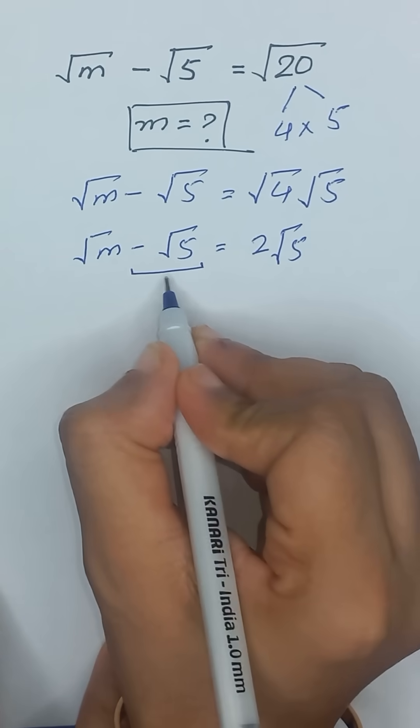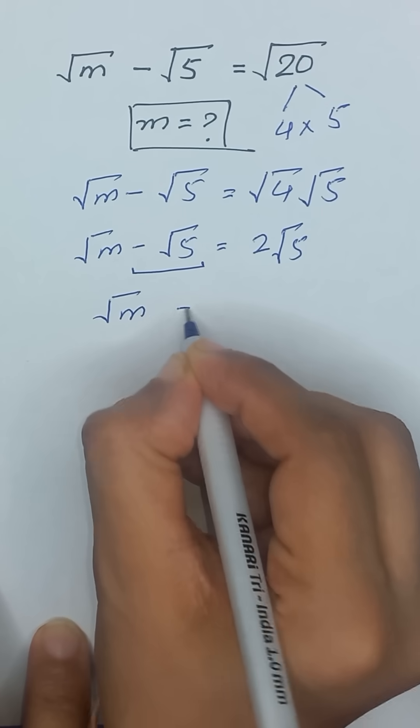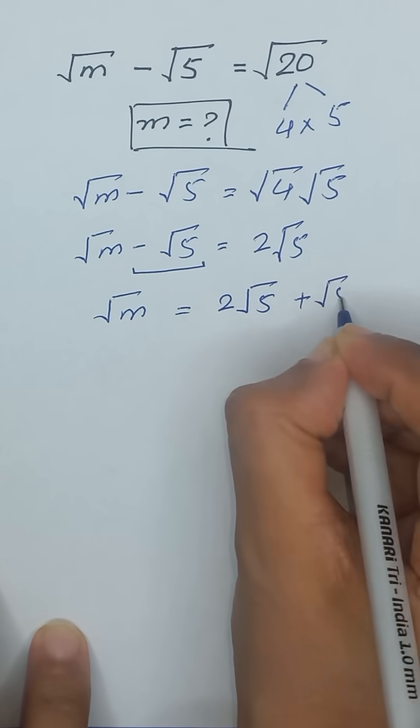I will take this negative square root of 5 to the right hand side. So it will become positive 2 times square root of 5 plus square root of 5.